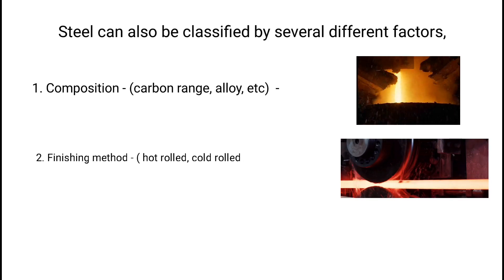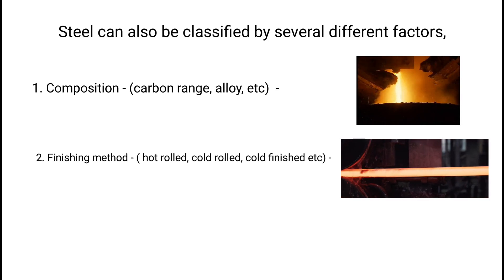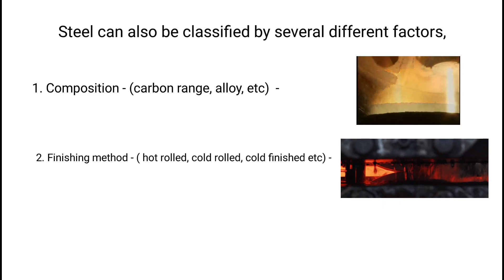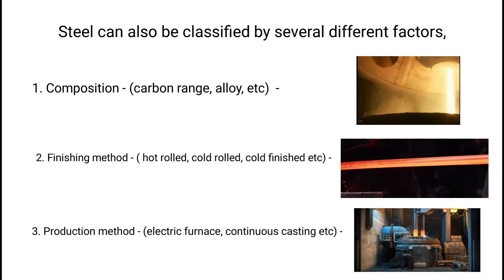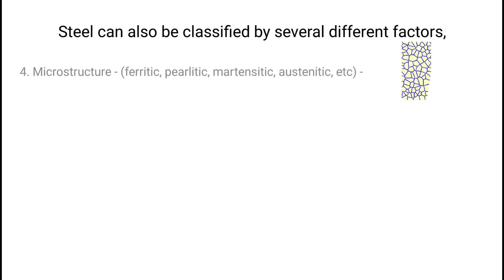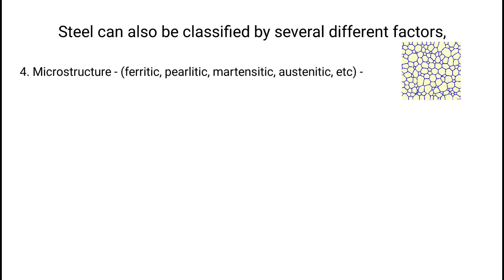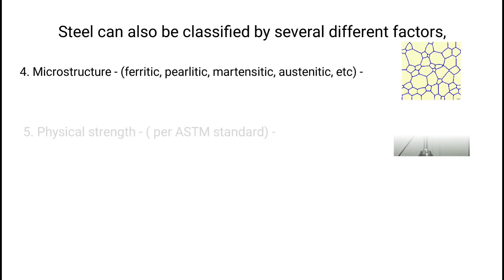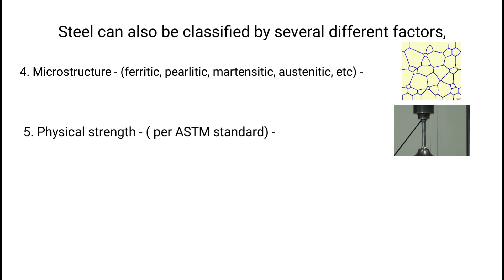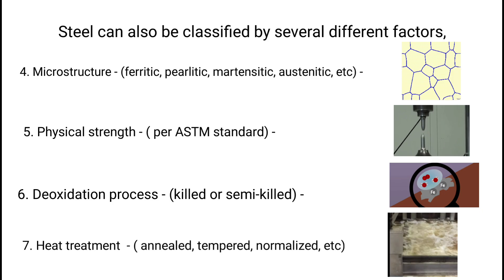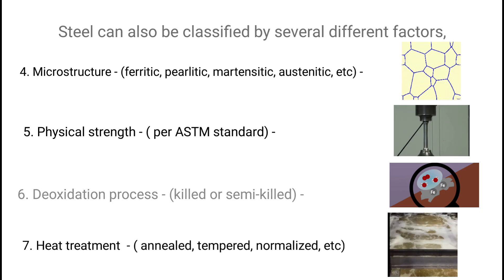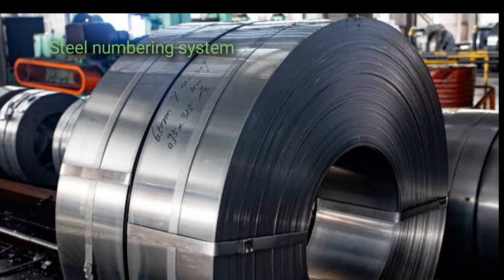Steel can also be classified by several different factors, including composition (carbon range, alloy, etc.), finishing method (hot rolled, cold rolled, cold finished, etc.), production method (electric furnace, continuous casting, etc.), microstructure (ferritic, pearlitic, martensitic, austenitic, etc.), physical strength per ASTM standard, deoxidation process (killed or semi-killed), and heat treatment (annealed, tempered, normalized, etc.).